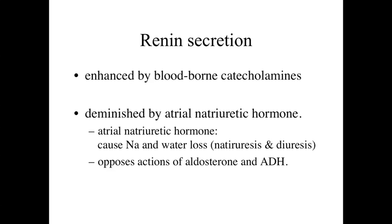Renin secretion can be enhanced by blood-borne catecholamines, which we'll discuss further in the upcoming endocrine system lectures. It can be diminished by atrial natriuretic hormone, which causes natriuresis and diuresis — essentially eliminating sodium and water from the body. This has an opposite effect to hormones like aldosterone and ADH (anti-diuretic hormone). Catecholamines and atrial natriuretic hormone can regulate ion concentration and fluid concentration within the bloodstream.